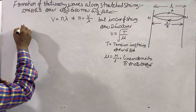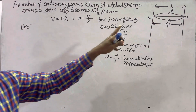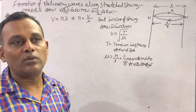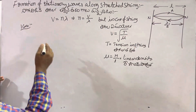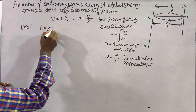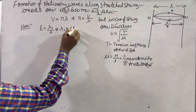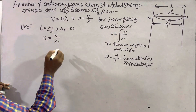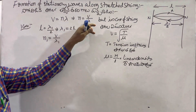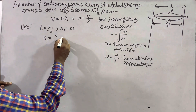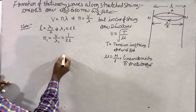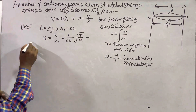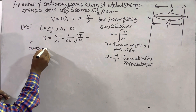For Case 1, the string vibrates with two nodes and one anti-node. The frequency n1 equals v by lambda 1, which gives n1 equals 1 by 2L times the square root of T by mu. This is the fundamental frequency.